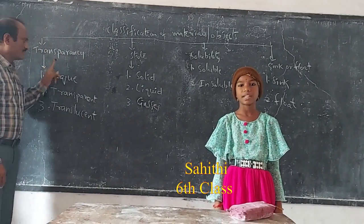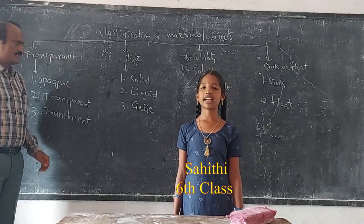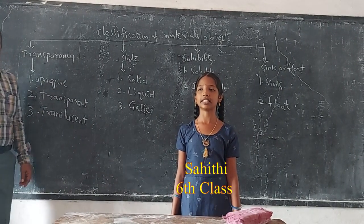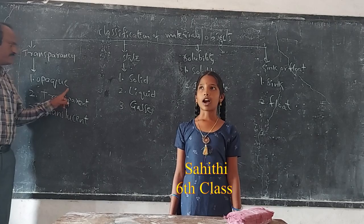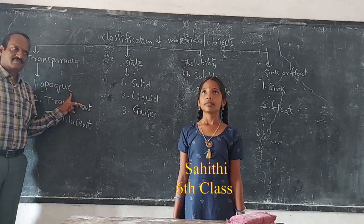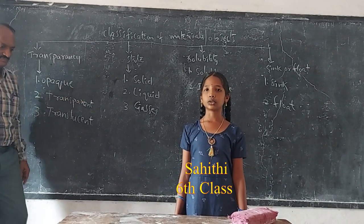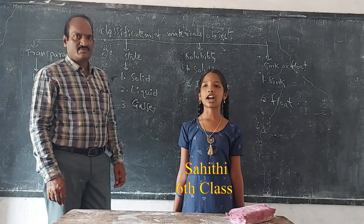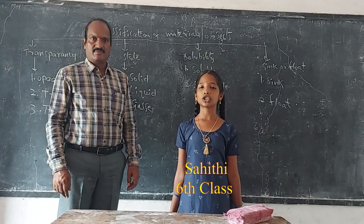the objects are classified into three types. Opaque objects do not allow light through them and form shadows. Example: book.